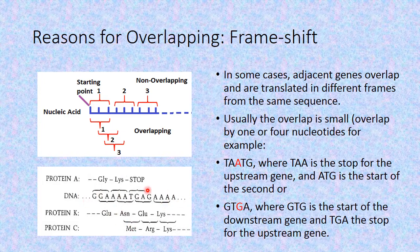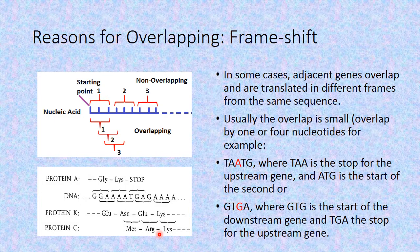Such a sequence of nucleotides that codes for protein, where the same sequence codes for more than one type of polypeptide, means that these genes are known as overlapping genes.